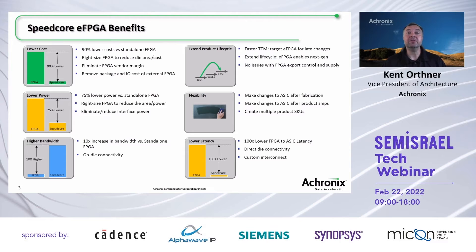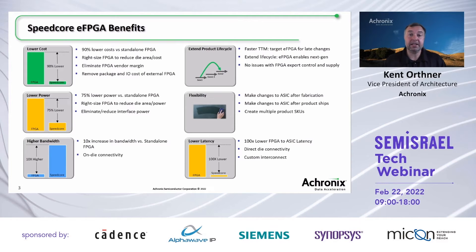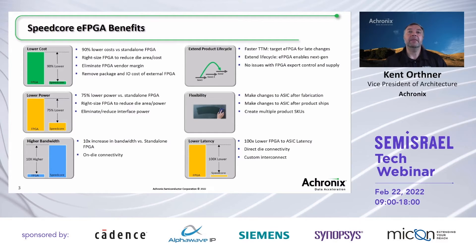Bandwidth is a similar story. Instead of driving connectivity across copper traces on the PCB, you get really low latency and high throughput on-die connectivity. It's much lower latency to connect the FPGA core inside the ASIC to the subsystems you care about than to go to a PCB. And finally, this provides significant flexibility and the ability to extend your product lifecycle, because you can change what the FPGA is doing over time and release multiple products based on the same die, where the personality in the FPGA allows different functionalities.